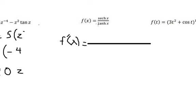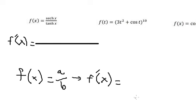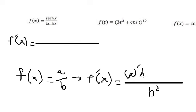Now let's go to the next one. The formula for the quotient rule should be like this: we take b squared and do the first derivative of a, minus the first derivative of b multiplied with a. This is the formula.